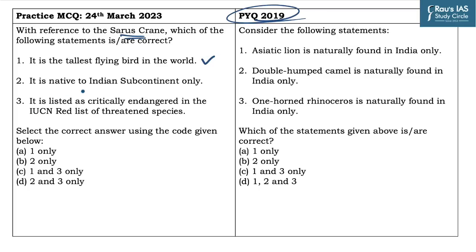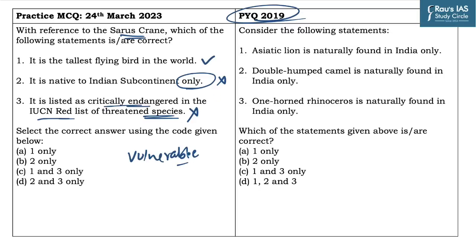The second statement says it is native to the Indian subcontinent only. Whenever you come across this particular term, you must be very careful. UPSC has a habit of asking statements in this particular fashion. It is an incorrect statement as the Sarus Crane is found in the Indian subcontinent, Southeast Asia, and Northern Australia. The last statement says it is listed as critically endangered in the IUCN Red List of Threatened Species — this is again incorrect as Sarus Crane is listed as vulnerable, not critically endangered. So statements 2 and 3 are incorrect and the answer becomes A, which is one only.